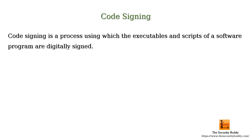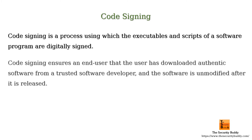Code signing is a process using which the executables and scripts of a software program are digitally signed. Code signing ensures an end user that the user has downloaded authentic software from a trusted software developer and the software is unmodified after it is released.